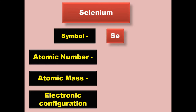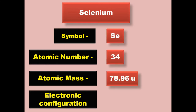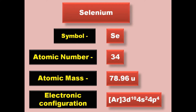Selenium has symbol Se, atomic number 34, atomic mass 78.96, electronic configuration [Ar] 3d10 4s2 4p4. Selenium is a non-metal and exists in solid form at room temperature.